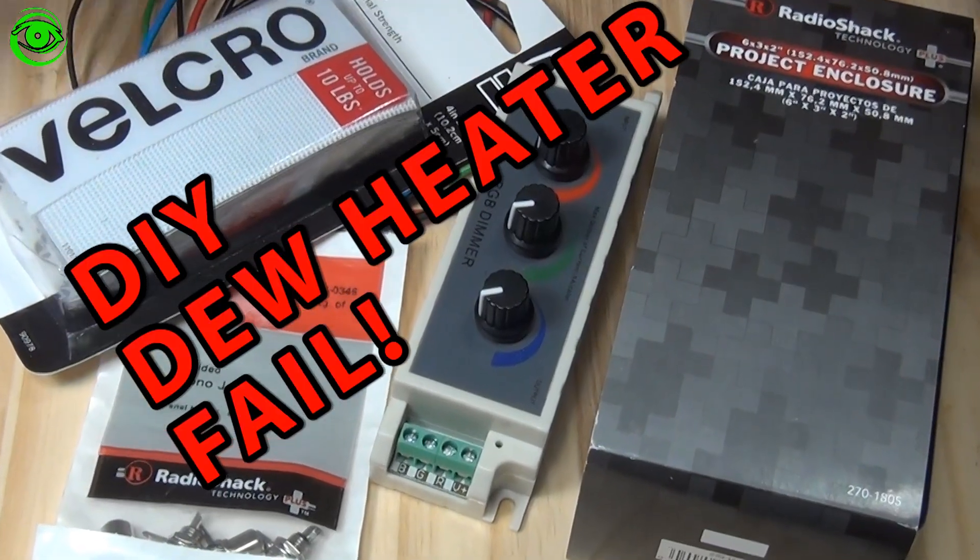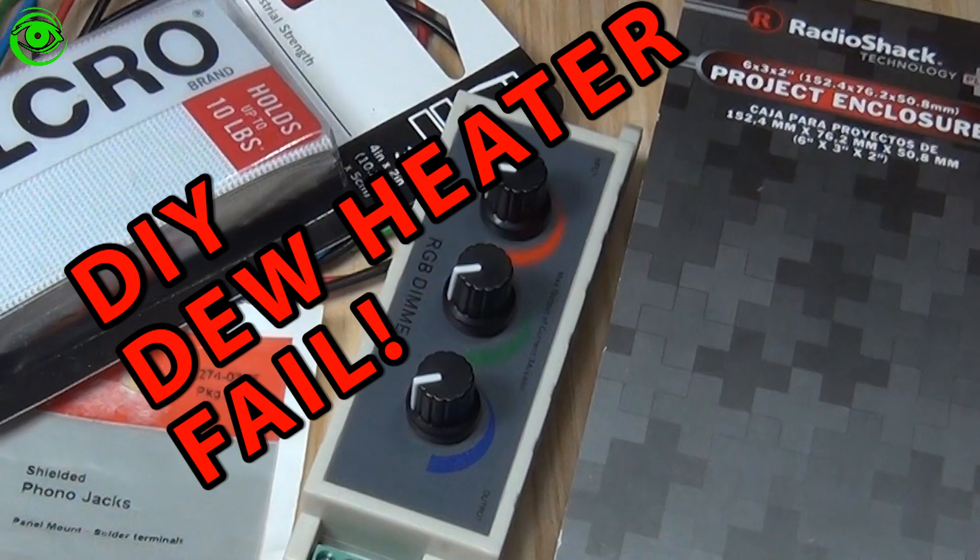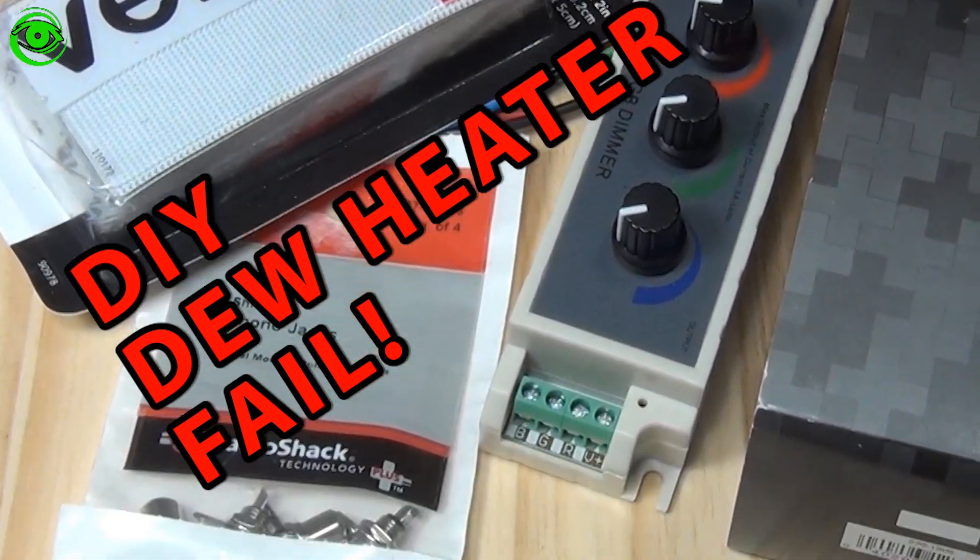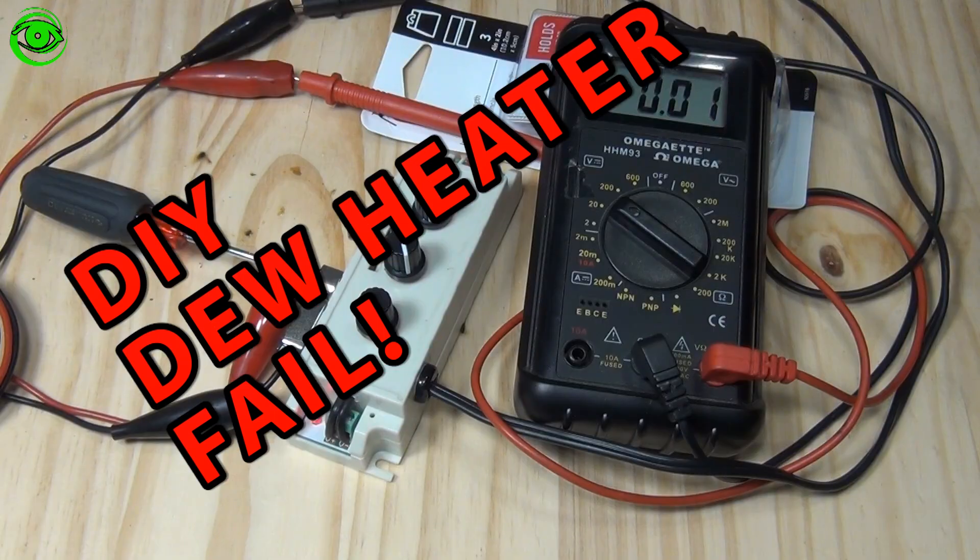This is an overview of all the parts and pieces. I found this information on DSLRmodifications.com. It suggests a 3 channel RGB dimmer.